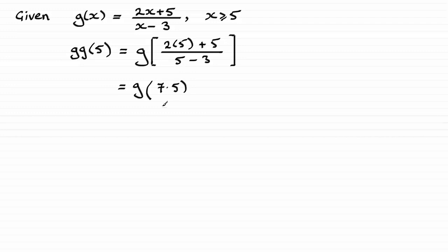And if I now substitute 7.5 in for x, we're going to have 2 lots of 7.5. Again I'll just put the working in. Plus the 5 and that's all over 7.5 minus 3.